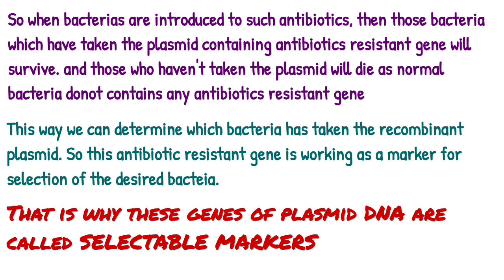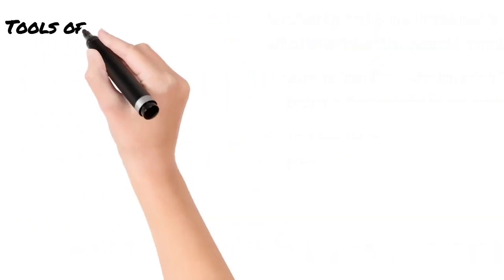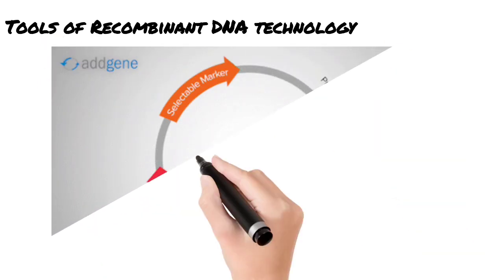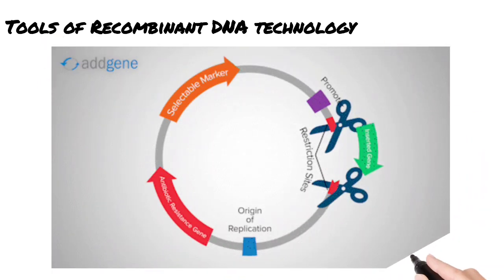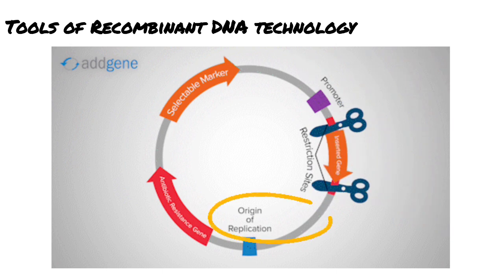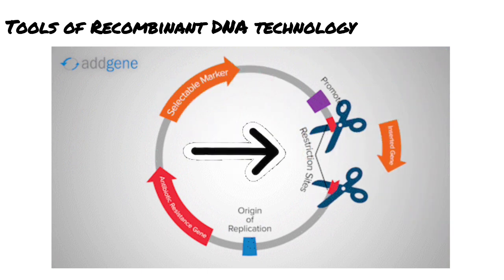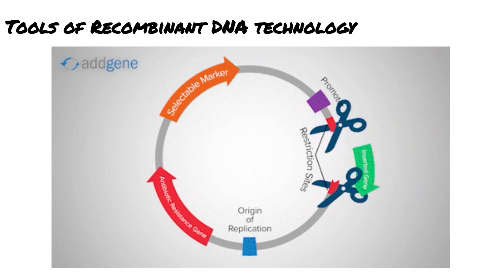Let's look at the image of plasmid to visualize the features. Here you can see the origin of replication from where the replication starts. There is a selectable marker site, for example ampicillin or tetracycline, and there is a cloning site or recognition site where restriction enzyme makes the cut and the desired DNA part is added.